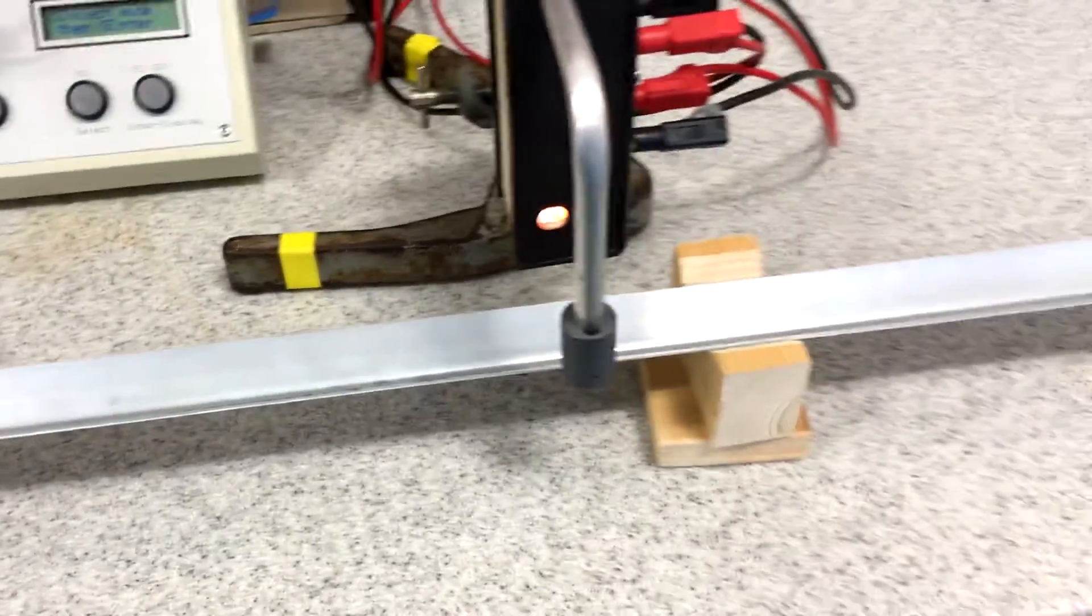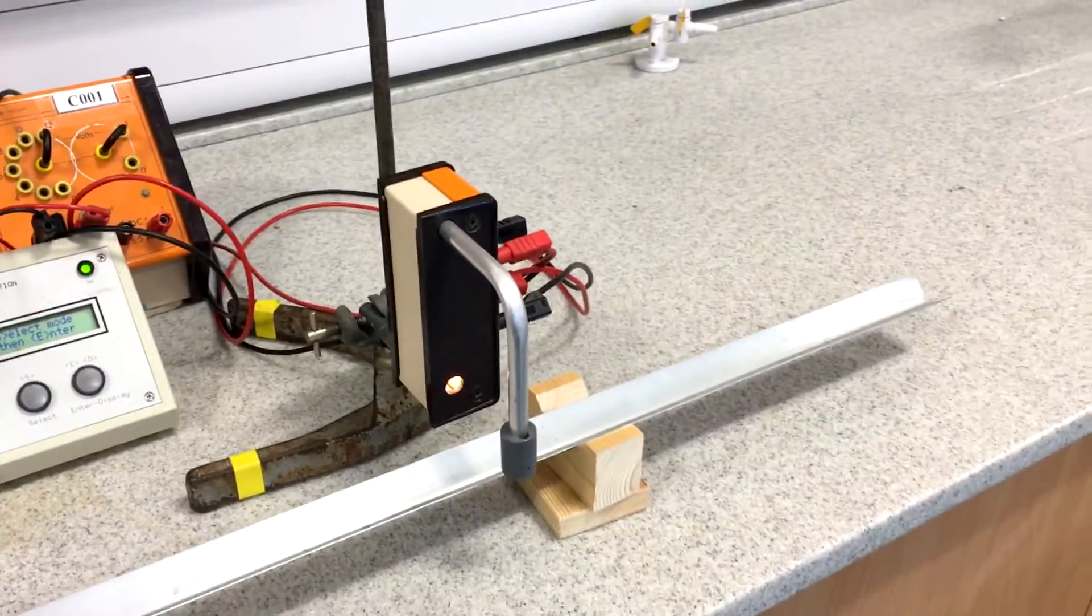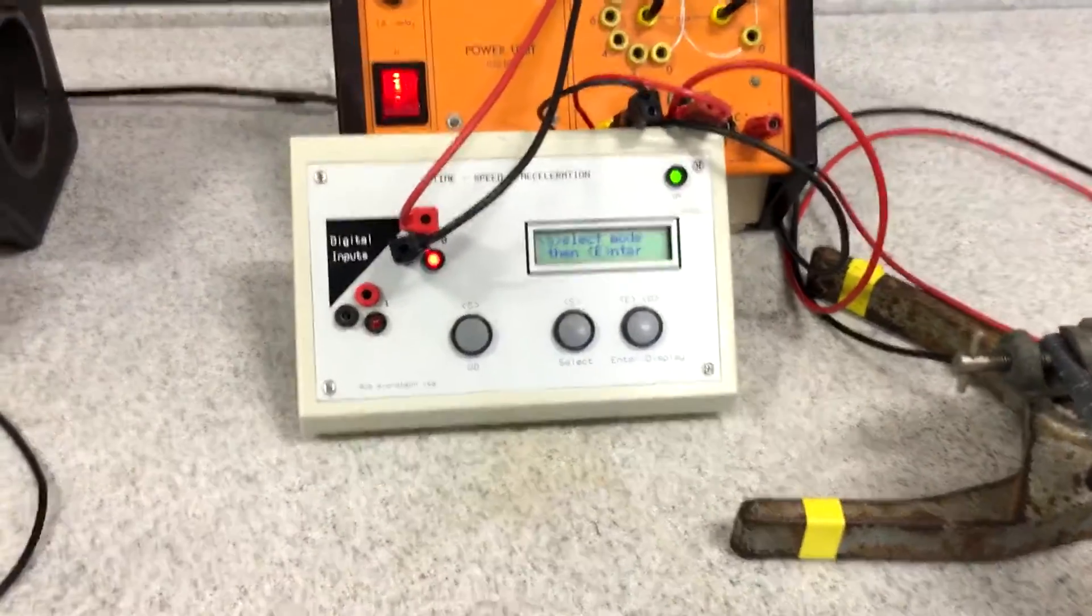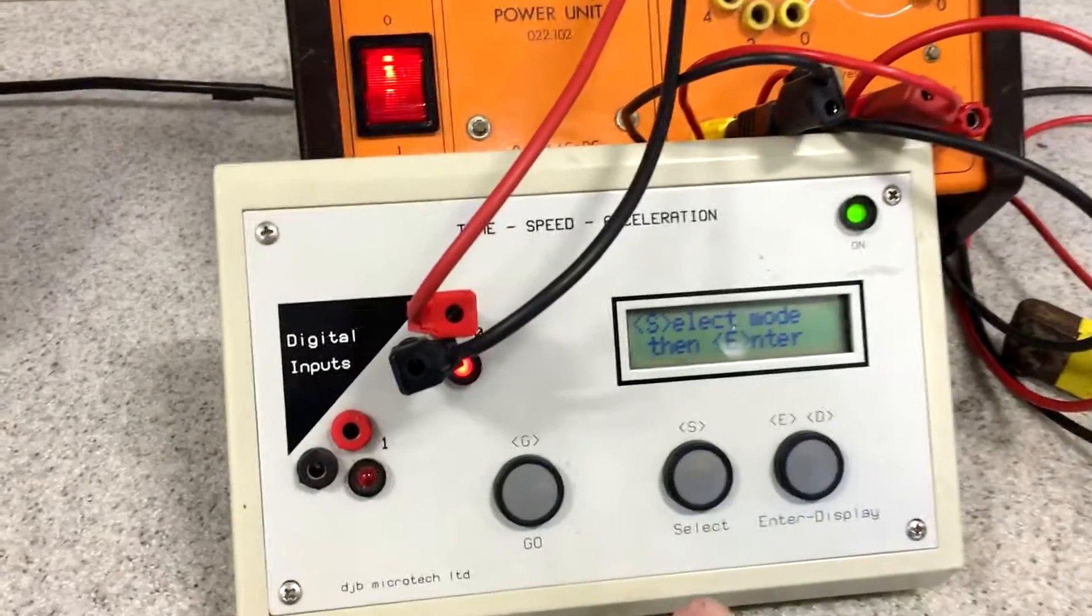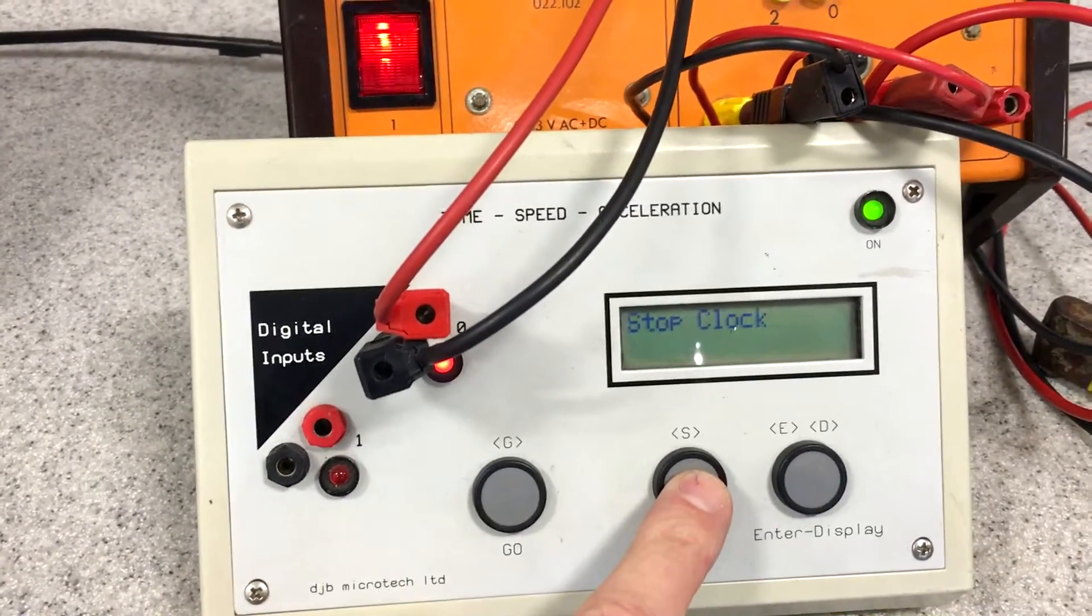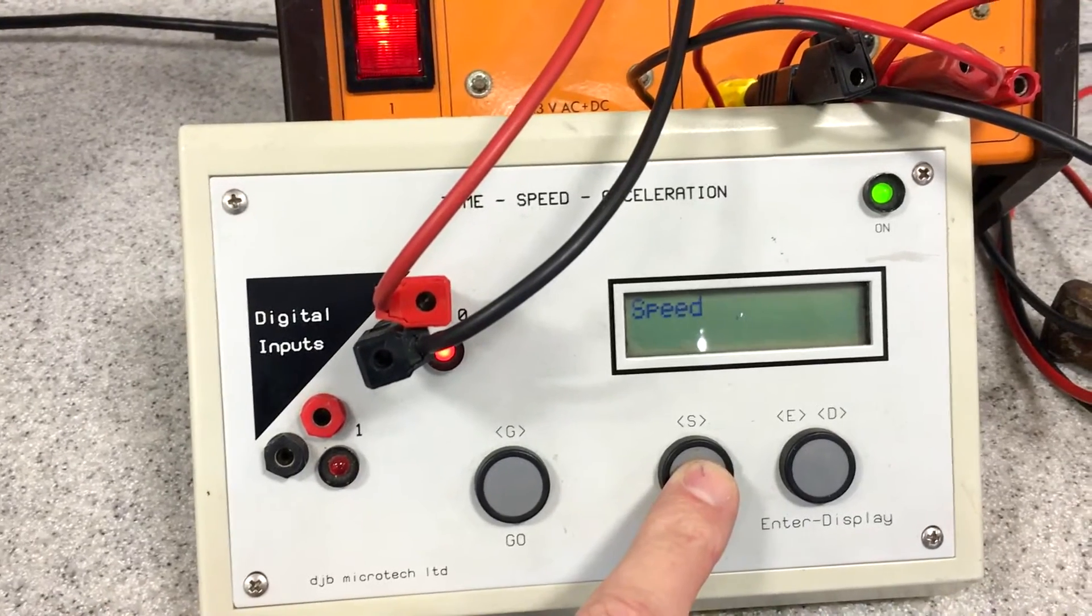The ball's going to travel along through this light gate, which is connected to this second TSA computer. So we need to tell this little computer here we want it to measure speed. The speed of the ball going through the light gate, so we set it to measure speed.